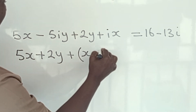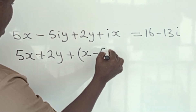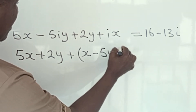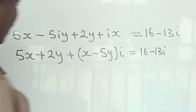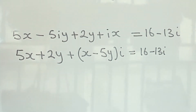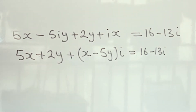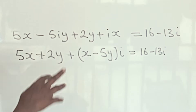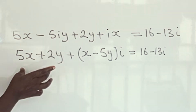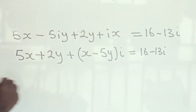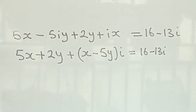Collecting terms, we get (5x plus 2y) plus (x minus 5y)i is equal to 16 minus 13i. Since they are equal, the real part should equal the real part and the imaginary part should equal the imaginary part. So we form two equations.